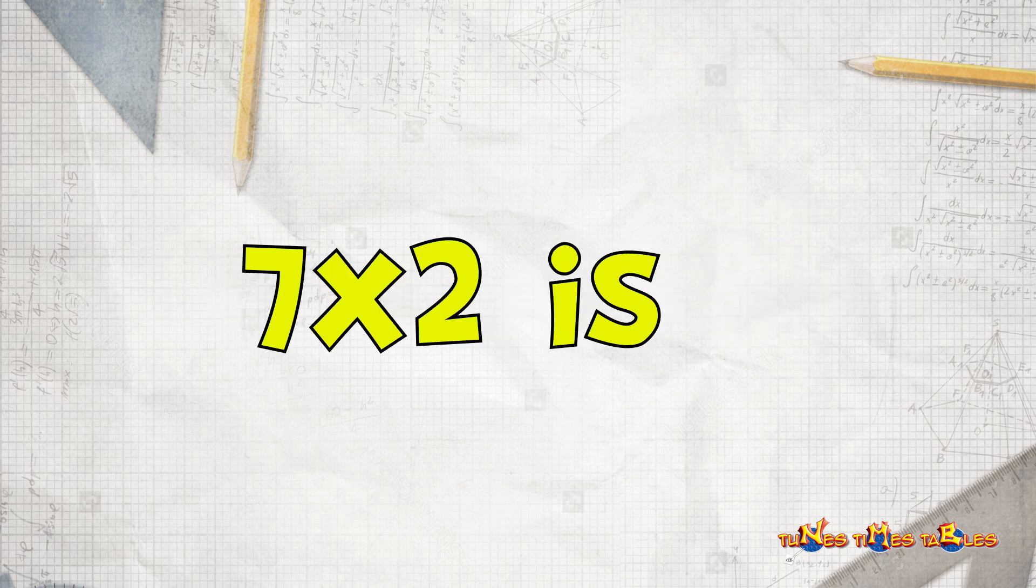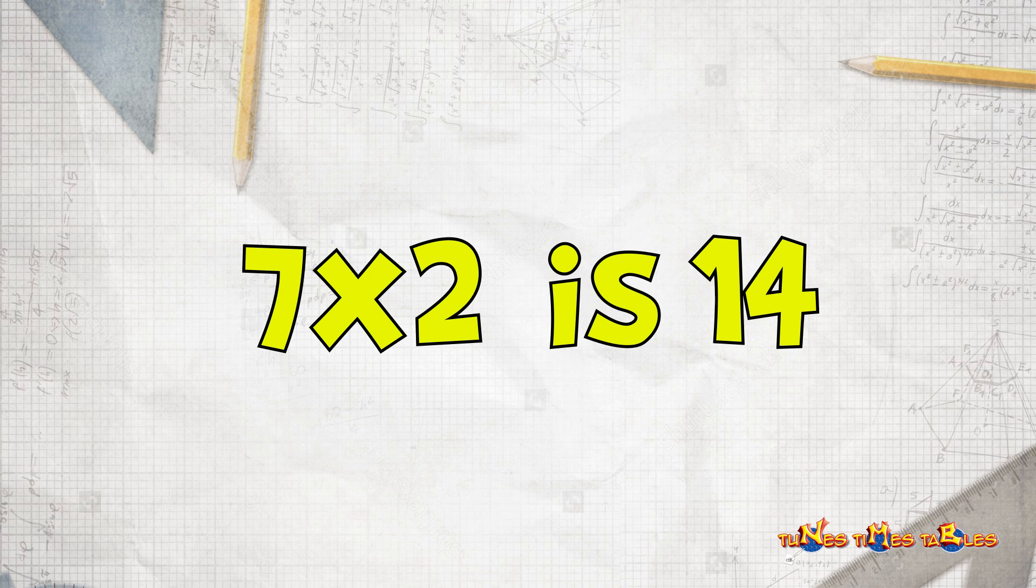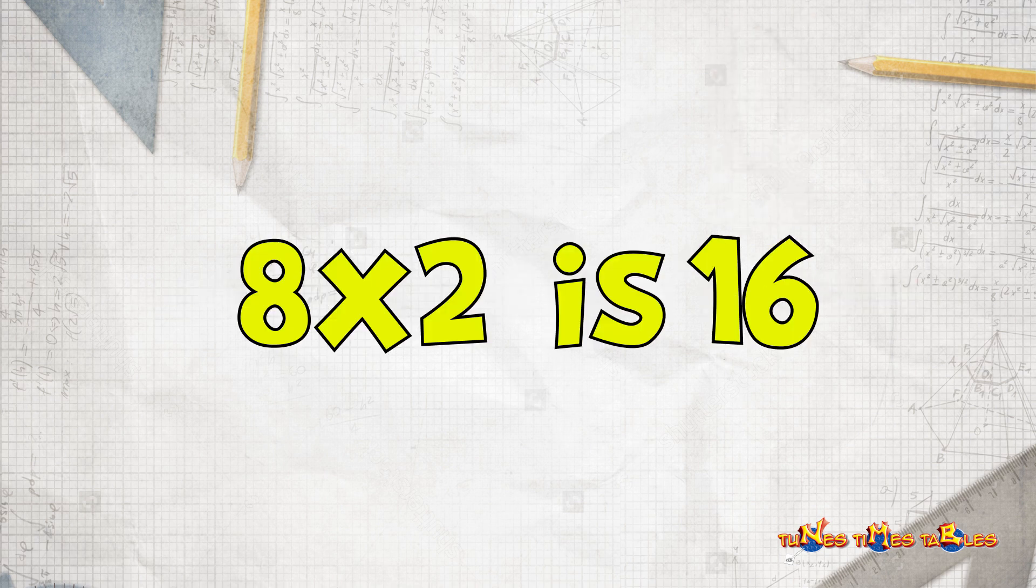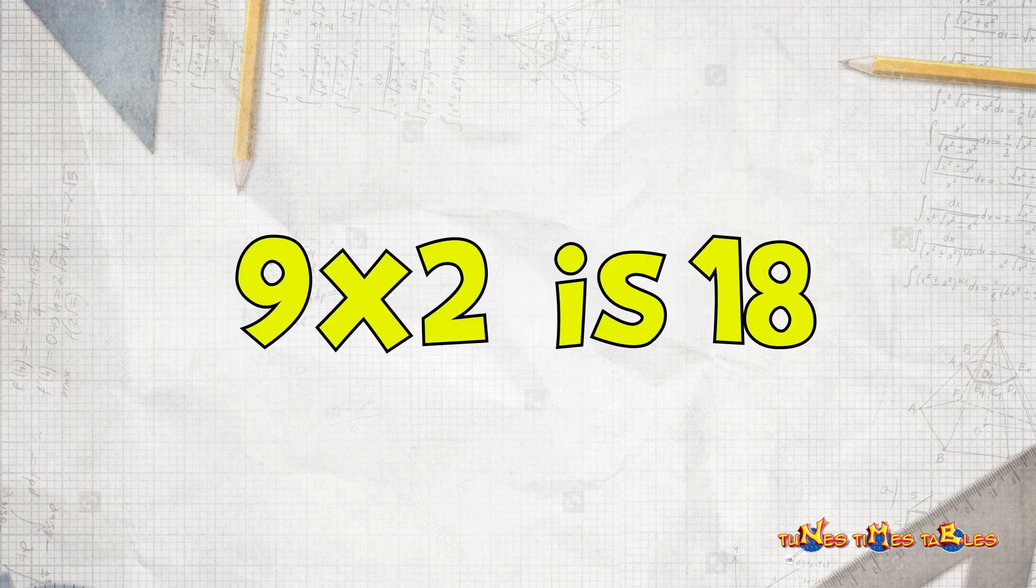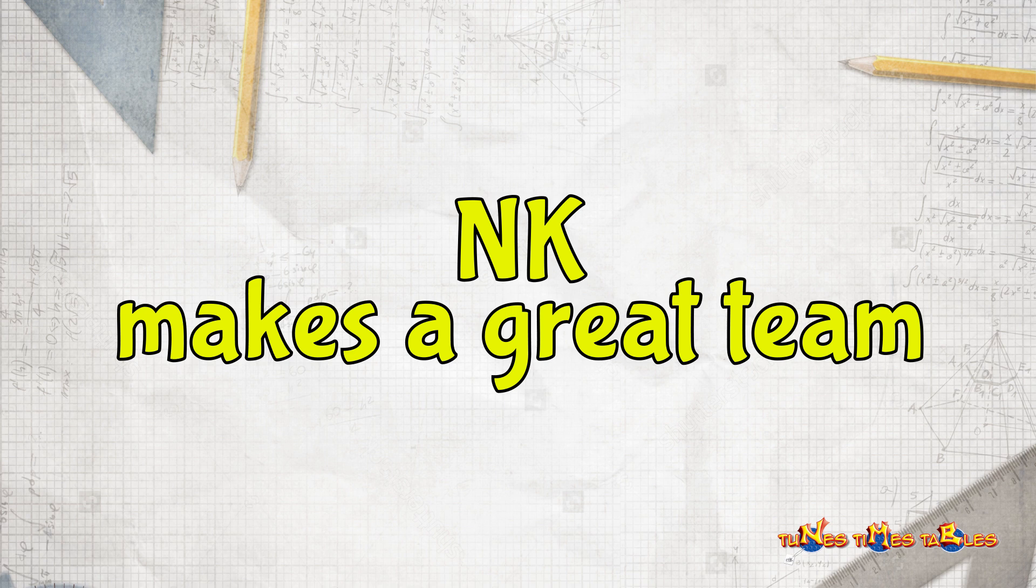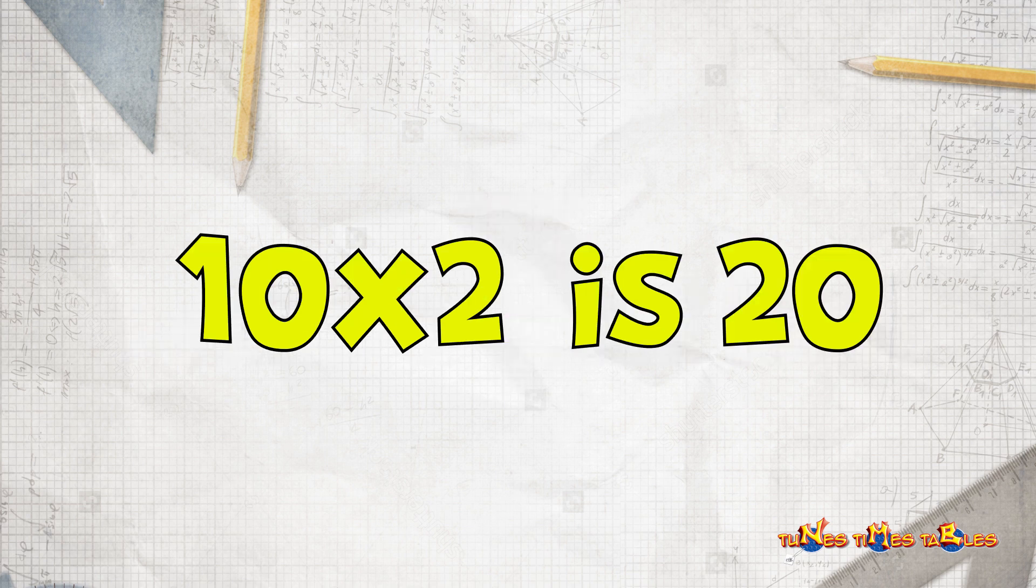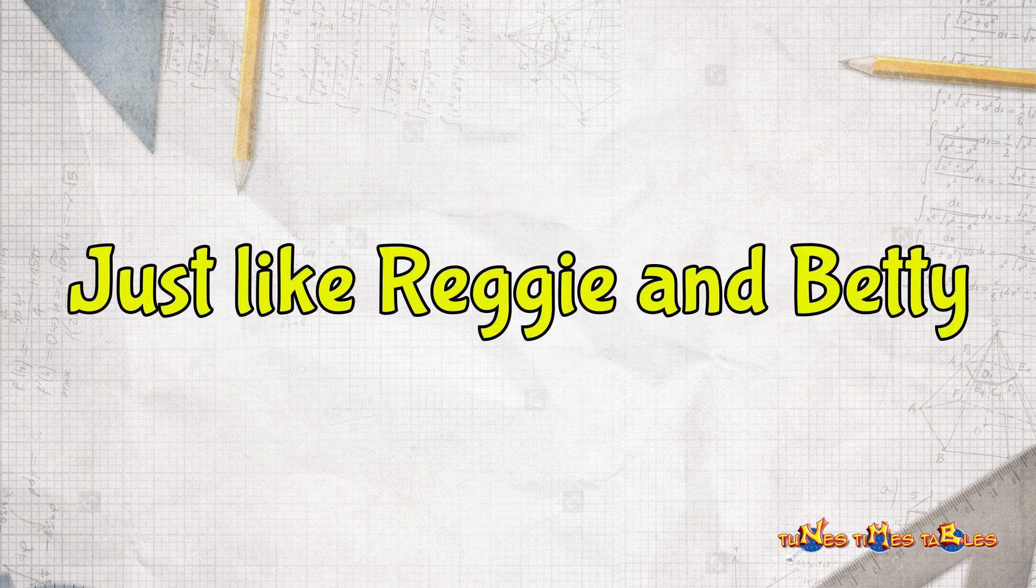7 x 2 is 14. Certainly, just don't worry. 8 x 2 is 16. There's no need to look mean. 9 x 2 is 18. We make a great team. 10 x 2 is 20, just like Reggie and Betty.